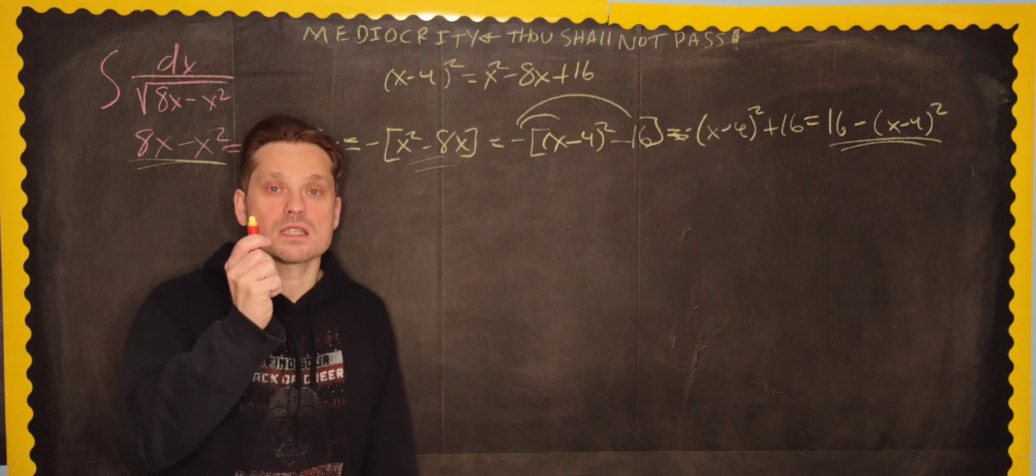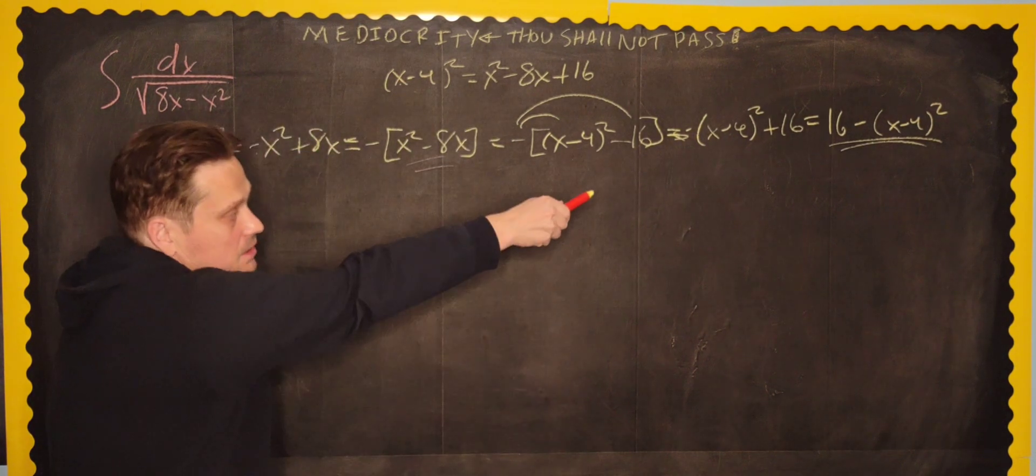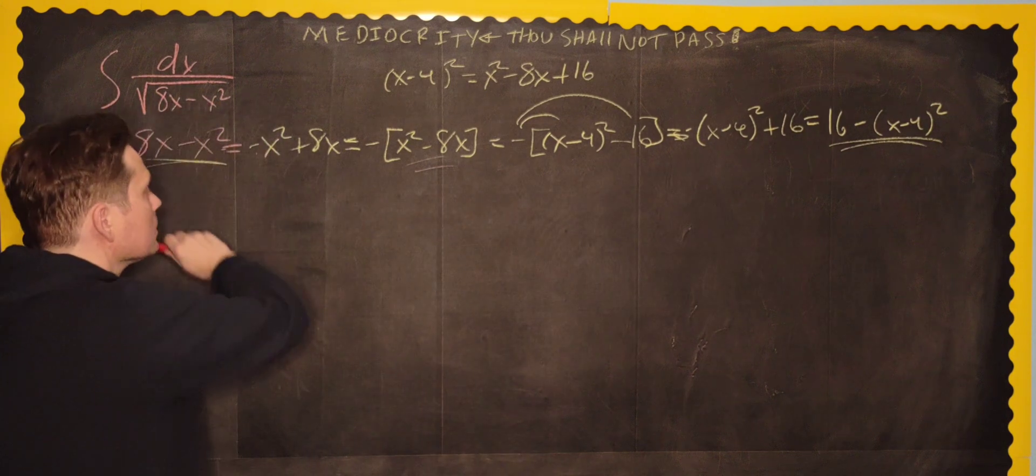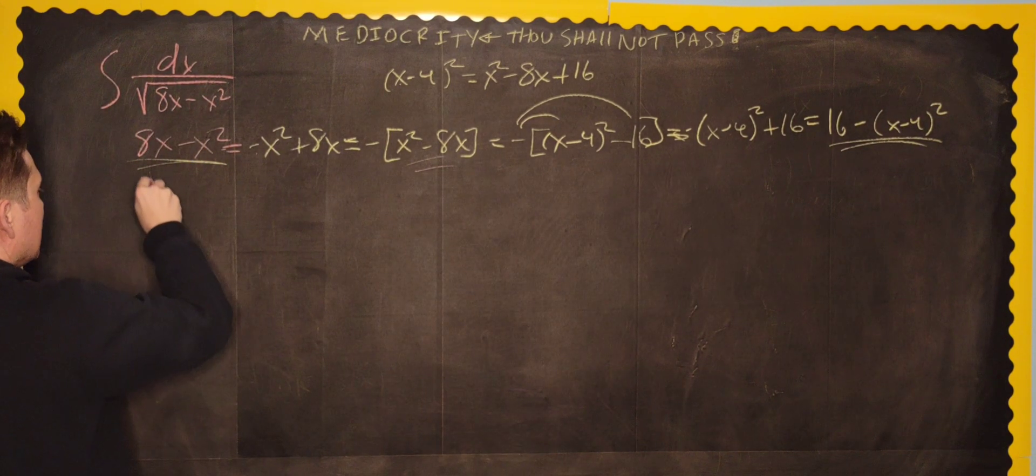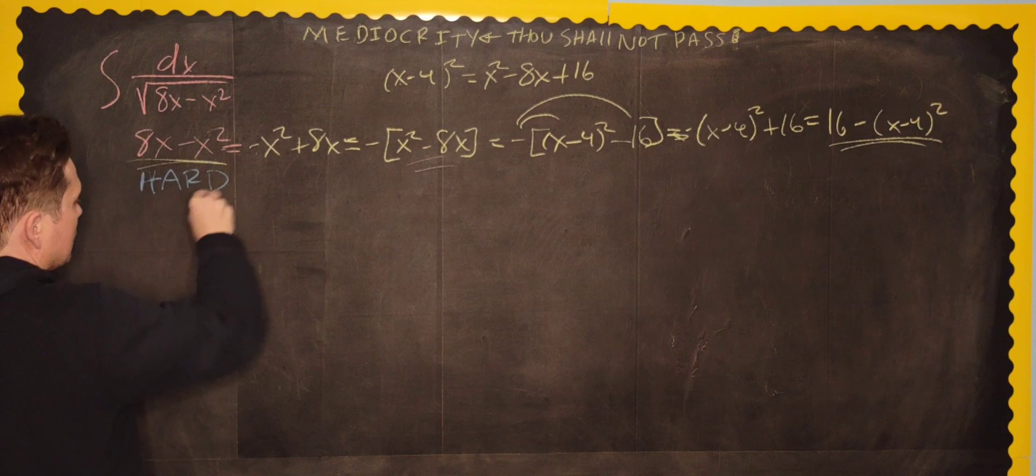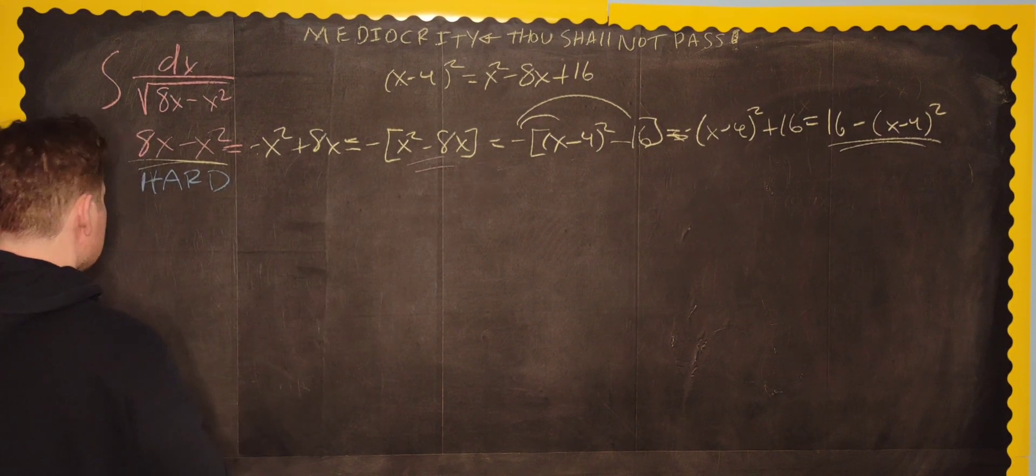The only difference is, why would we do this? Because that expression allows you to do the integral, whereas this one here, this one here is not doable this way. That one is doable. So let's take a look.